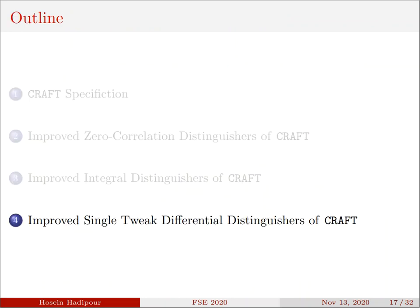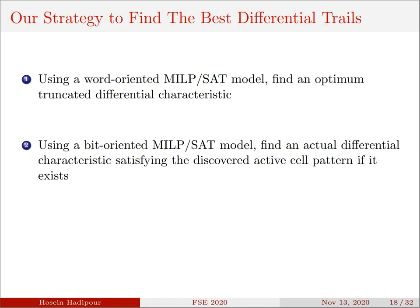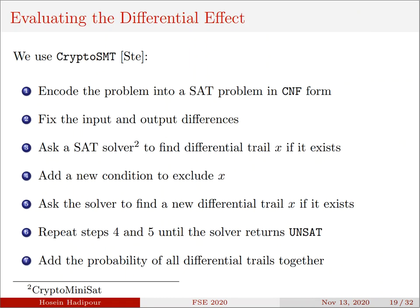Now we come to the last part of this talk, where I'd like to tell you about how we use a combination of automatic methods based on SAT solver and partitioning technique to significantly improve the differential distinguisher of CRAFT in single-tweak model. Our strategy to search for the best differential trail can be divided into three steps. Given that finding an actual differential characteristic is a time-consuming task, to expedite it, we use a word-oriented MILP or SAT model to find an optimum truncated differential characteristic at first.